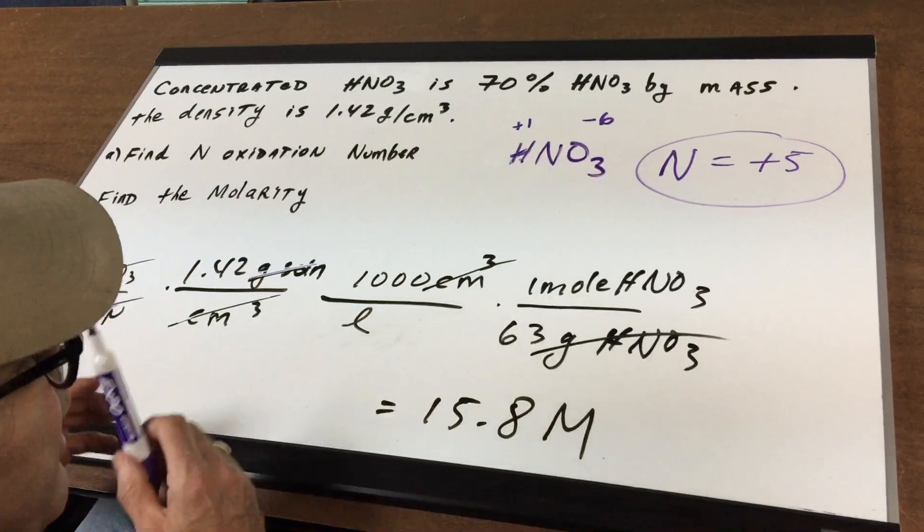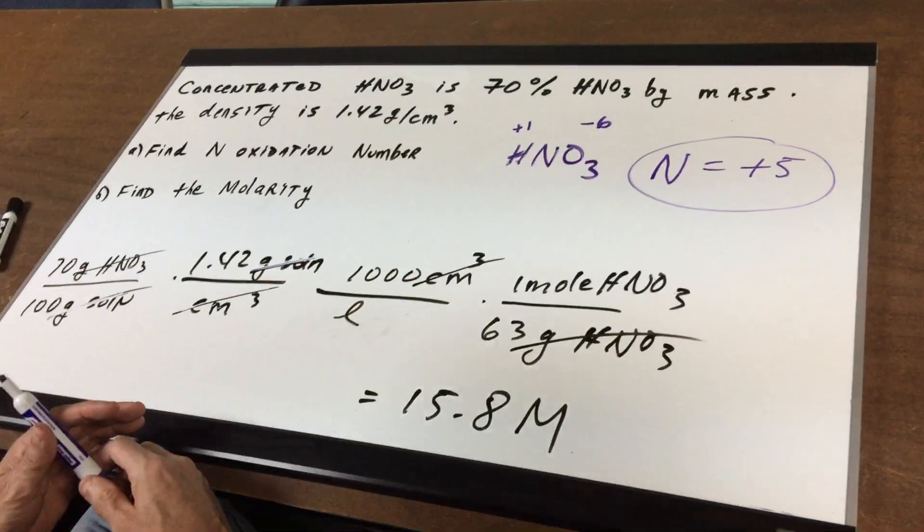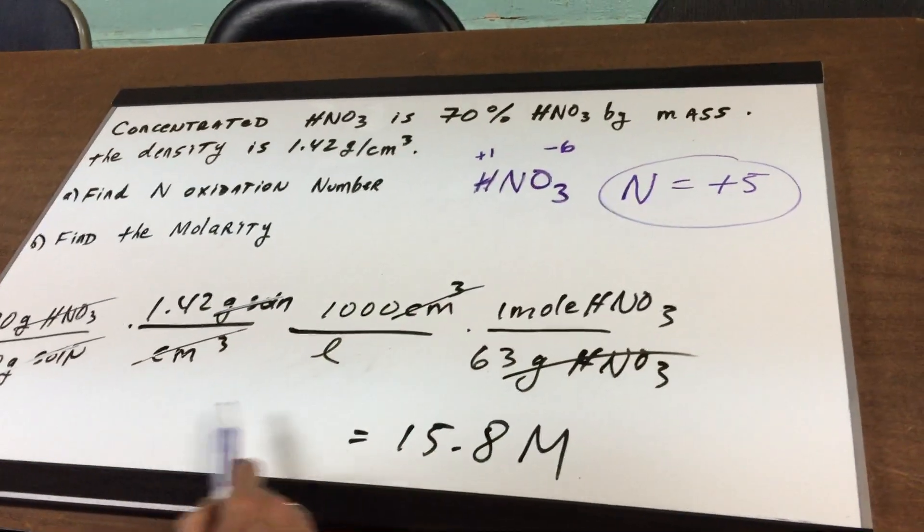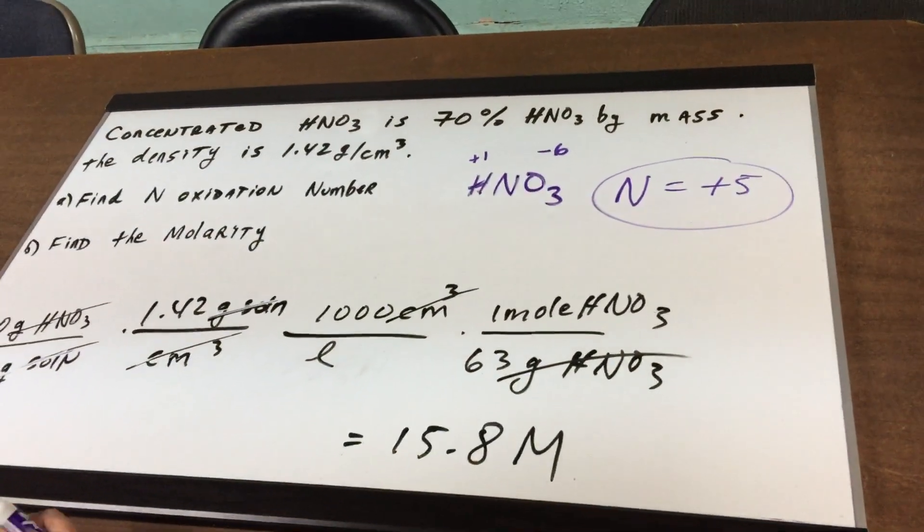The DAT will have numbers that are much nicer than this. But all I do is multiply this out and divide it, and we get 15.8 molar.